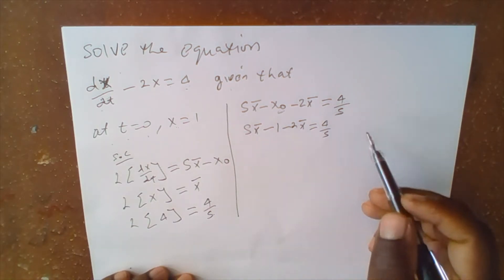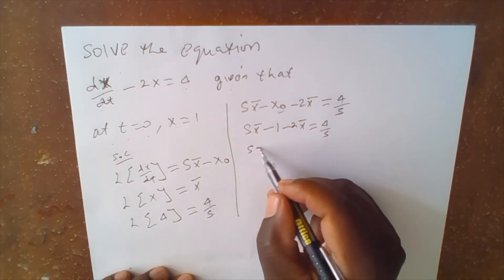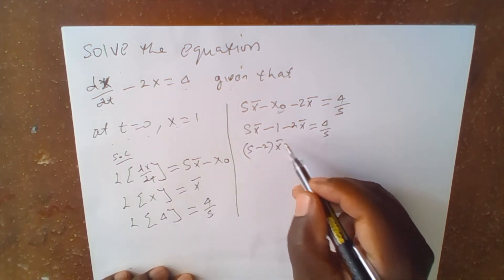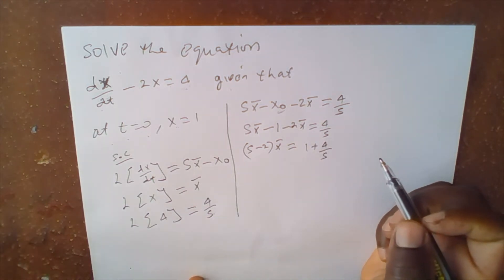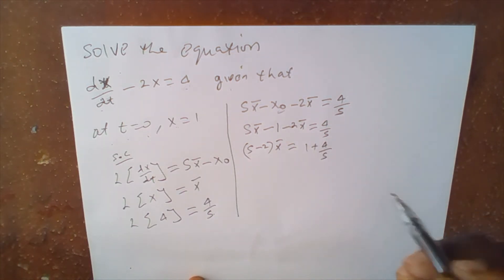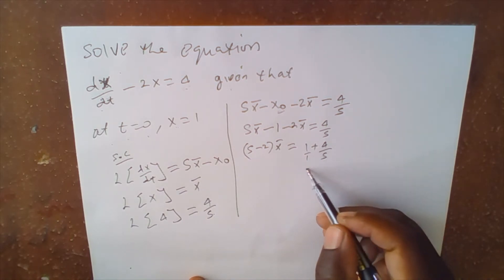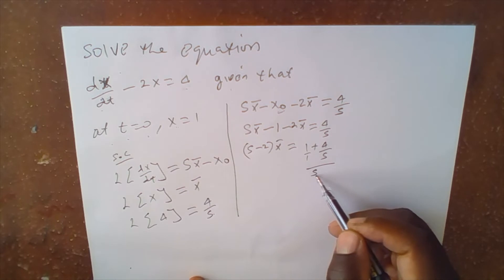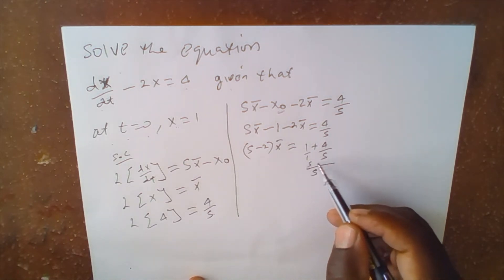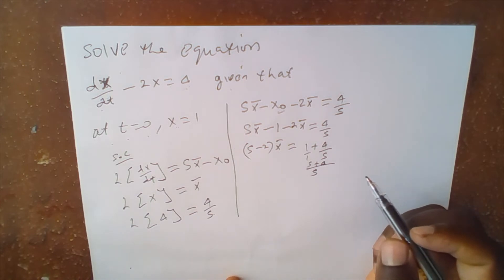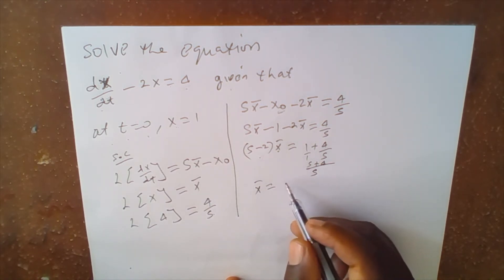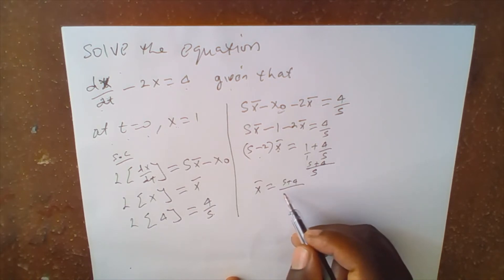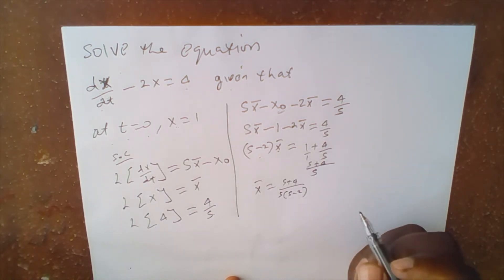We move the 1 across and factorize out x̄, giving (s minus 2)·x̄ equals 1 plus 4 over s. Combining the right-hand side: 1 times s gives s, so the numerator is s plus 4. Making x̄ the subject by dividing through by (s minus 2), we get x̄ equals (s plus 4) over s(s minus 2).